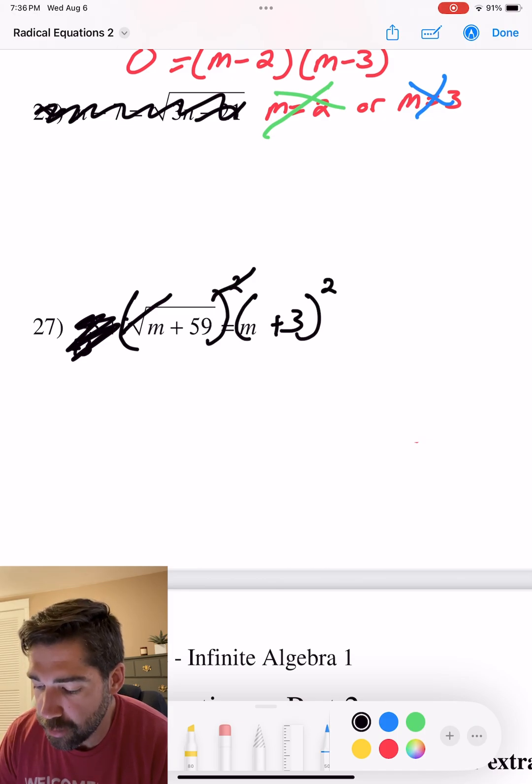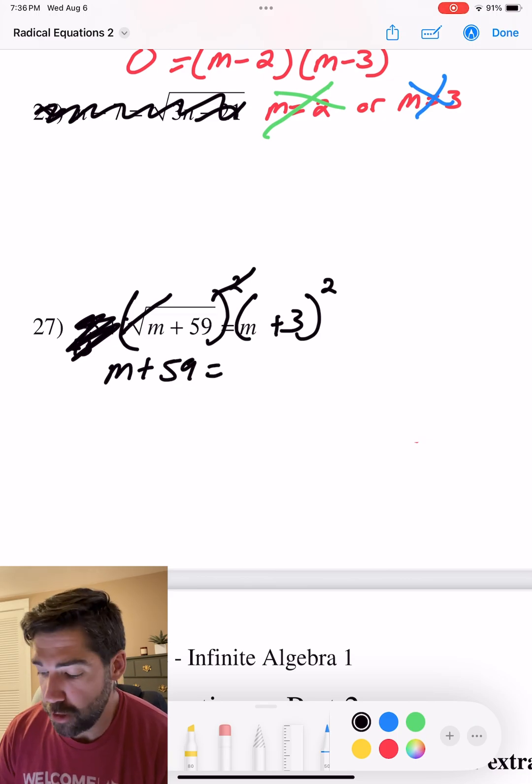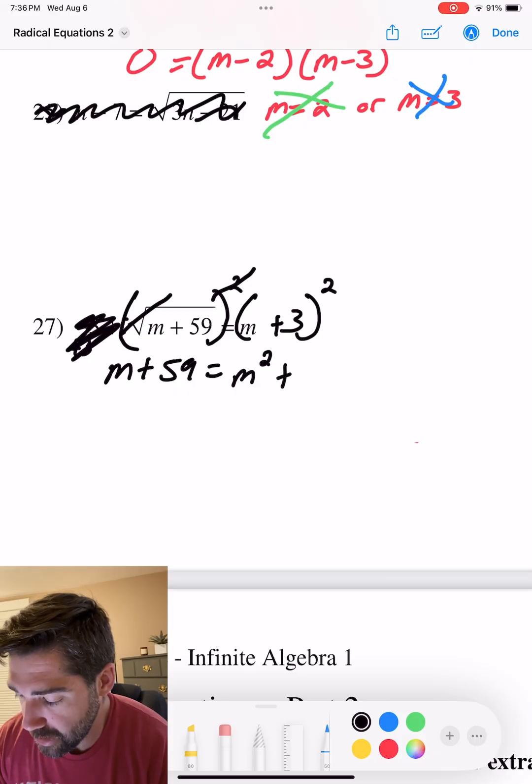The radicand just disappears. We're left with m plus 59 equals. Remember the trick I taught you? m times m is m squared. 3 times m is 3m times 2, because it happens twice, is 6m. 3 times 3 is positive 9.